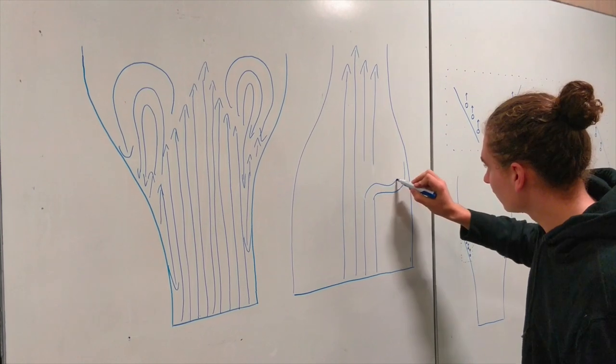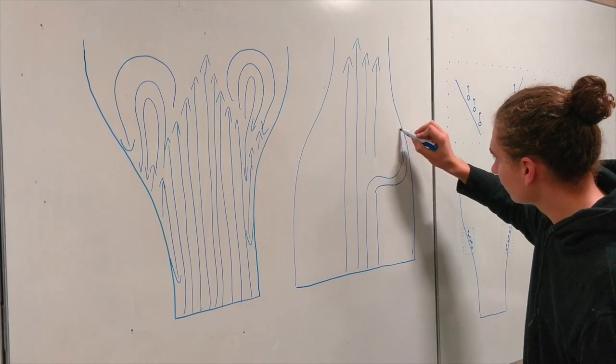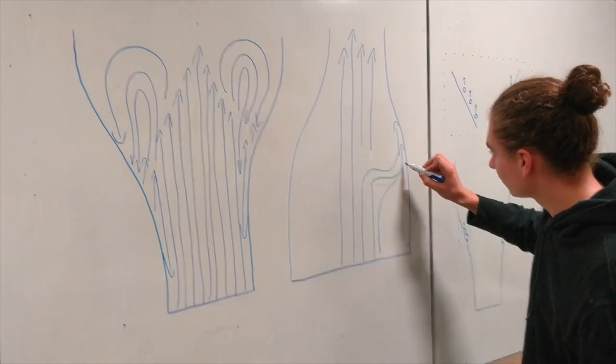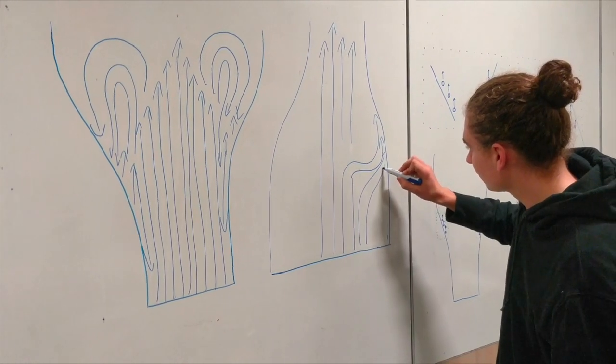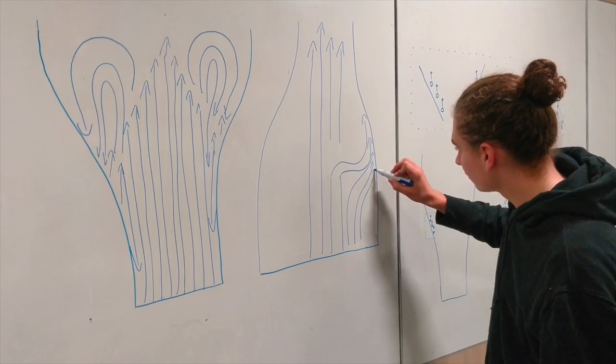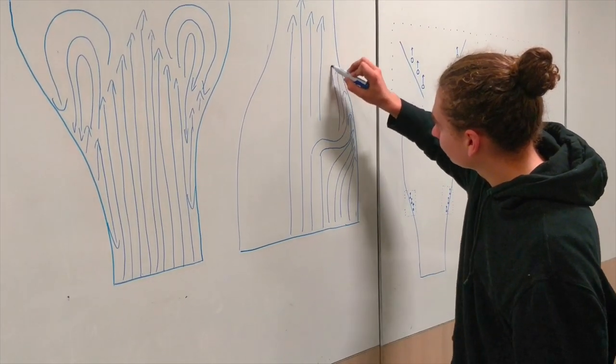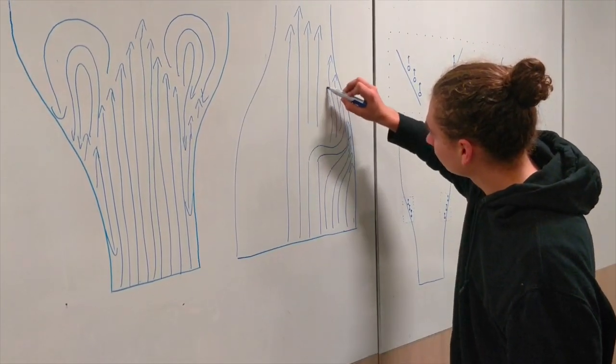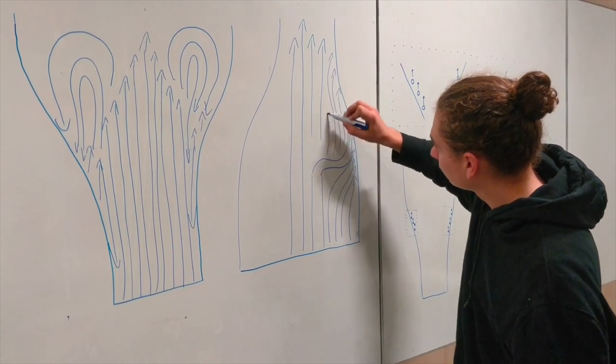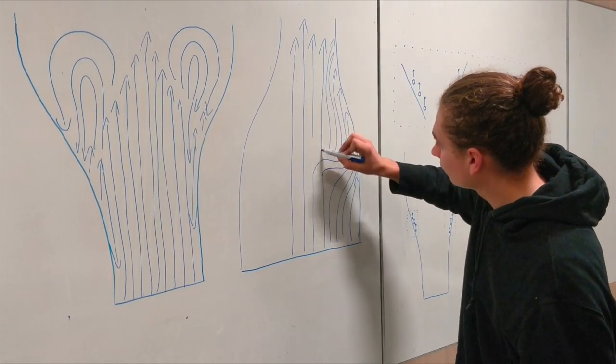So to answer the question, why do bubbles sink in Guinness? It's clearly not as simple as it first might have seemed, and relies on several things occurring at once: the shape of the container and the size of the bubbles. But if the bubbles are just the right size and the glass is just the right shape, you might see this phenomenon in your next pint.